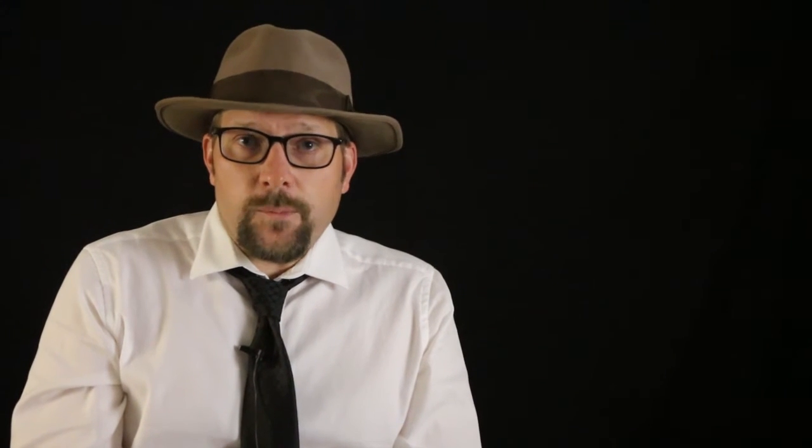If we look at a guppy, a little fish, the length and speed are much less, producing a much smaller Reynolds number of 383. These low Reynolds numbers mean that viscous forces dominate, with the greatest drag caused by friction. So the guppy does not need to be as streamlined, but it does need to worry about friction and changes in viscosity of the liquid it swims in. For example, the guppy would not be able to swim through honey, where an ichthyosaur might be able to. With high Reynolds numbers, pressure drag forces dominate and viscosity is of minor importance.